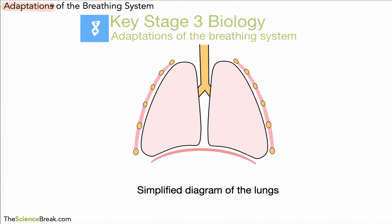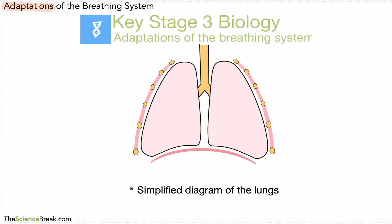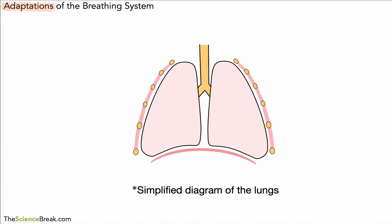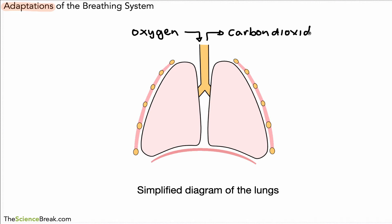Hello, today we're going to look at adaptations of the breathing system. Here we have a simplified diagram of the lungs in the body. The first thing to remind ourselves is that the whole point of the lungs is to bring in oxygen so it can be absorbed by the blood, and to remove carbon dioxide from the body.